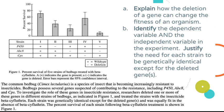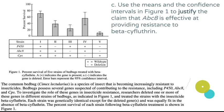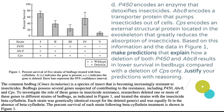Those big concepts we identified in the prompt are directly related to these questions — if you identified the big ideas, you can answer them. Part C says: 'Use the means and the confidence intervals in Figure 1 to justify the claim that ABC8 is effective at providing resistance to beta-cyfluthrin.' Looking at the means and confidence intervals, you should see a significant difference between organisms with and without ABC8.